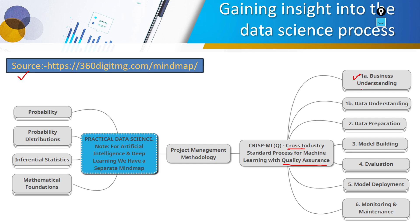We have domain experts or business analysts whose responsibility is to understand the business and convert that business problem into a data science problem. After understanding the business, the next job is to understand the data — which type of data we require. As a data scientist, the work starts with preparing data, building the model, evaluating it, deploying it, and then continuously monitoring the data.